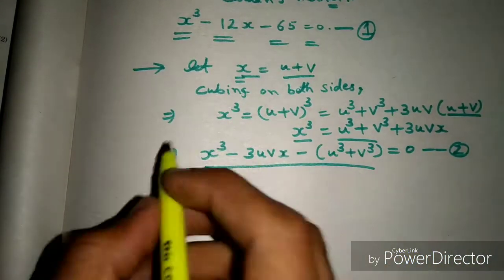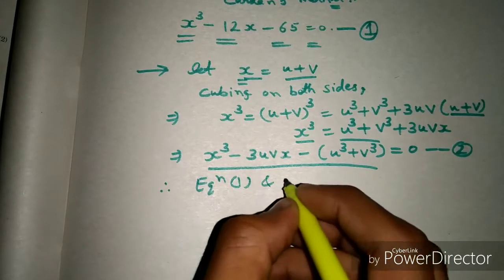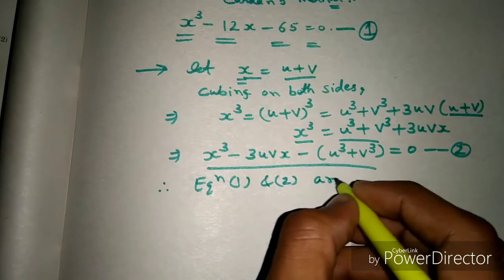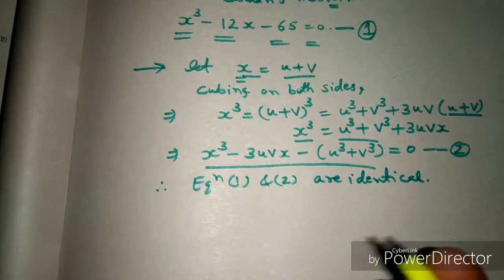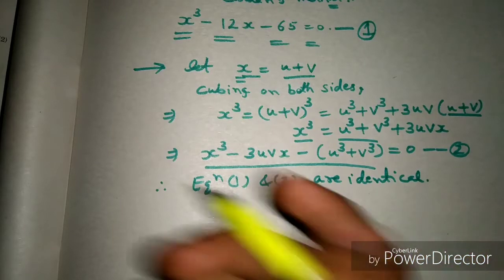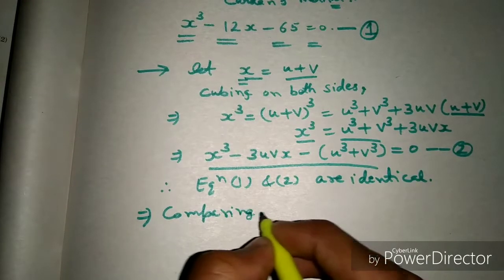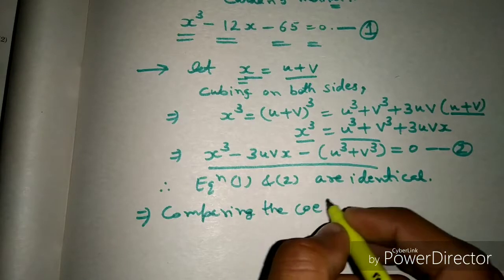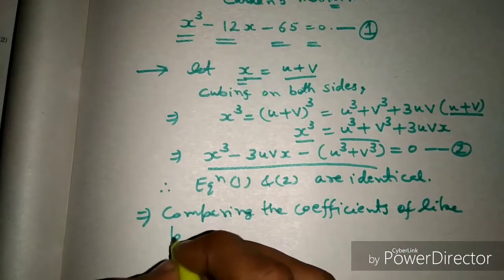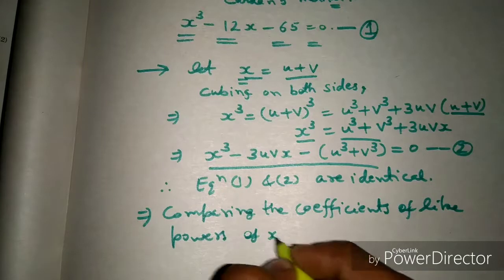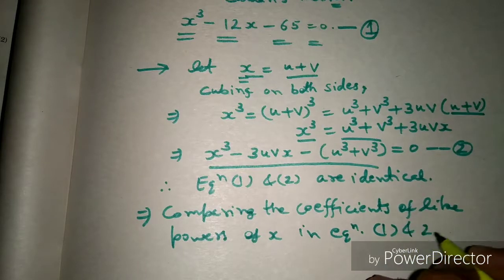From here we can see that equation number one and equation number two are both identical. Therefore, since both equations are identical, we can compare the coefficients of like powers of x in equation one and equation two.